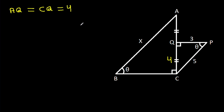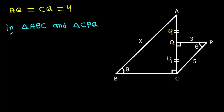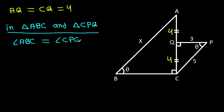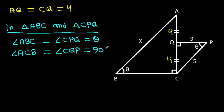CQ is 4 and we have AQ equal to CQ, so AQ is also 4. Now, in triangle ABC and triangle CPQ, angle ABC is equal to angle CPQ, that is theta, and angle ACB is equal to angle CQP, that is 90 degrees.